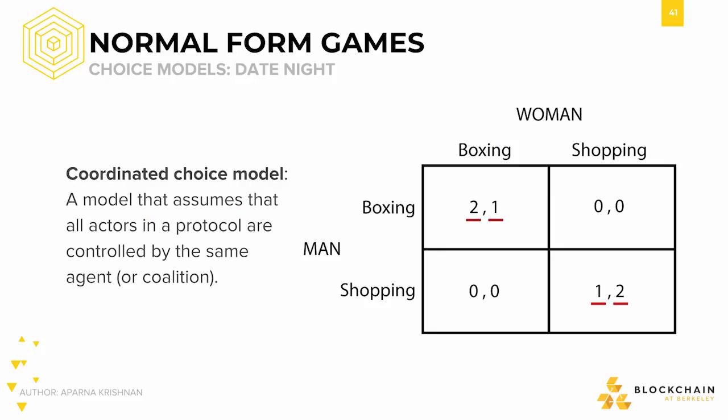Now let's take a look at an example where there are two Nash equilibria. Suppose a man and woman are deciding where to go on a date — boxing or shopping. If they both go boxing, the man will be slightly happier than the woman. If they both go shopping, the woman will be slightly happier than the man. However, if they choose different options, neither will be happy at all because they won't go on a date together. Thus, both going boxing and both going shopping are the Nash equilibria from which no one character can change their decision to receive a better payoff. Since there are two such Nash equilibrium outcomes, the two agents must coordinate to align their actions and pick one of the outcomes.